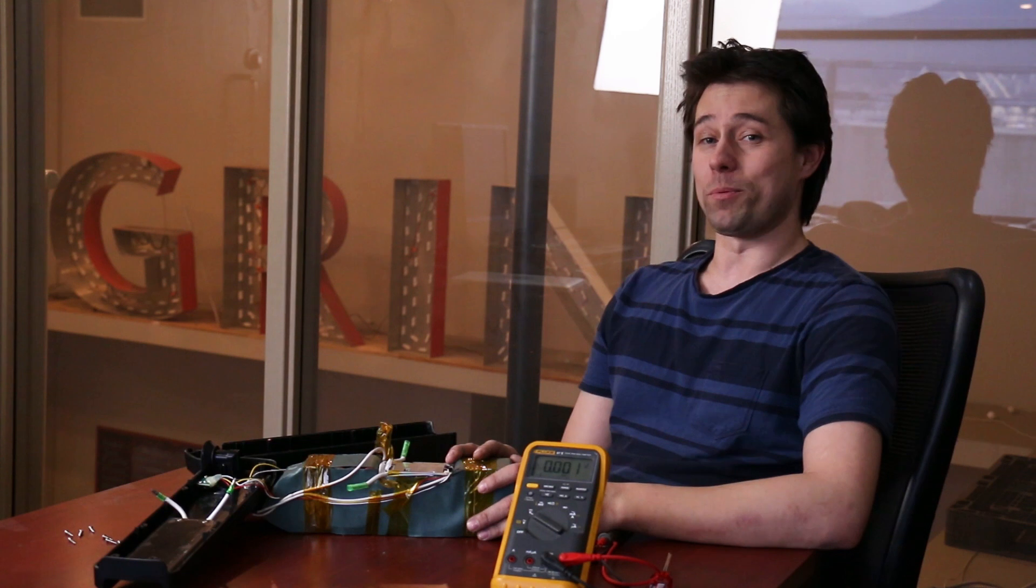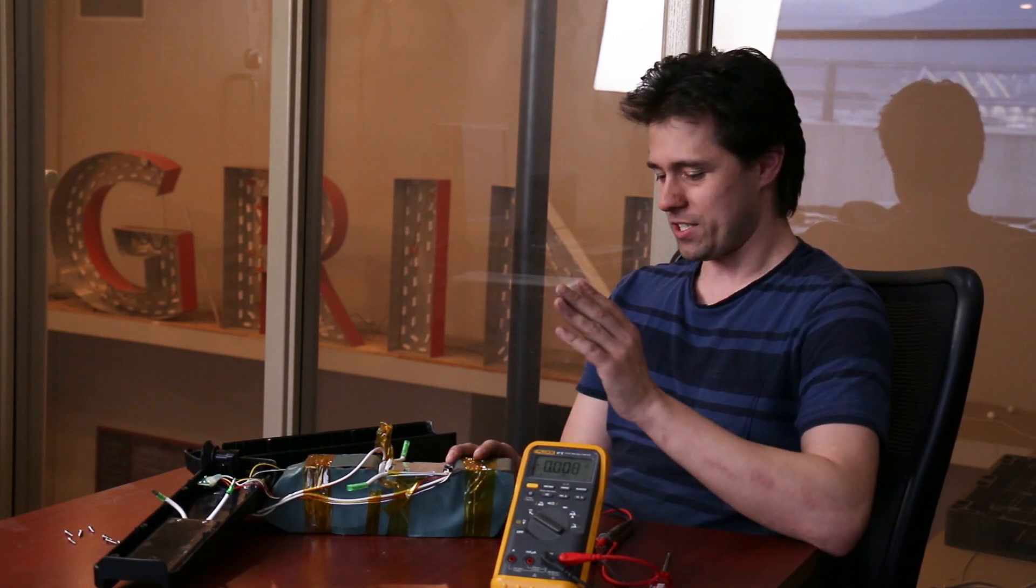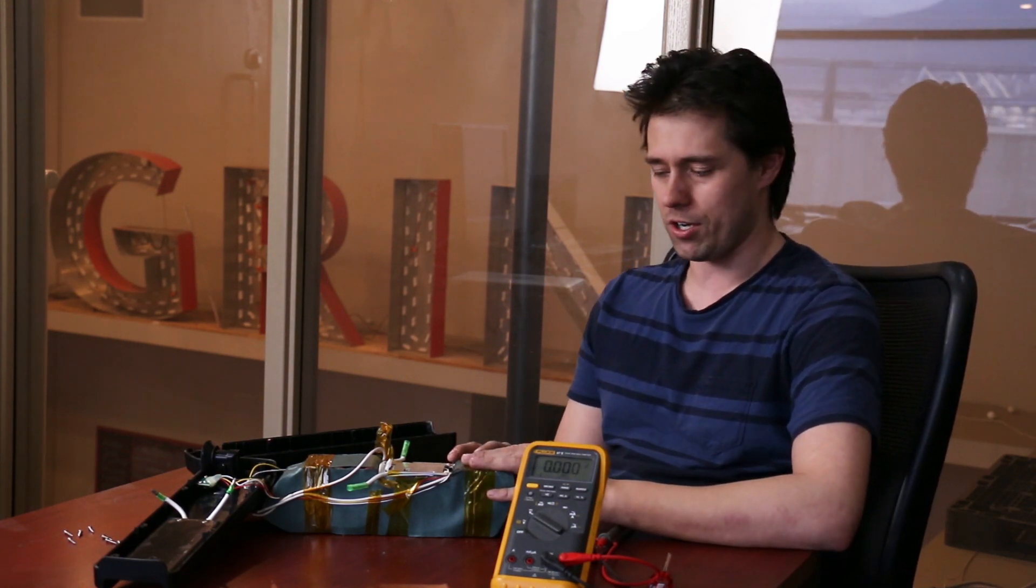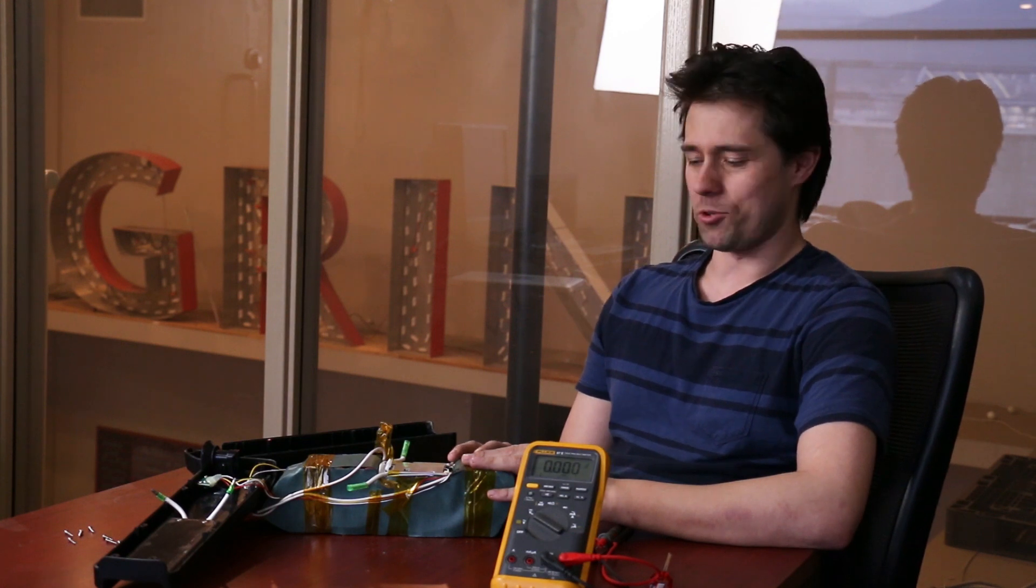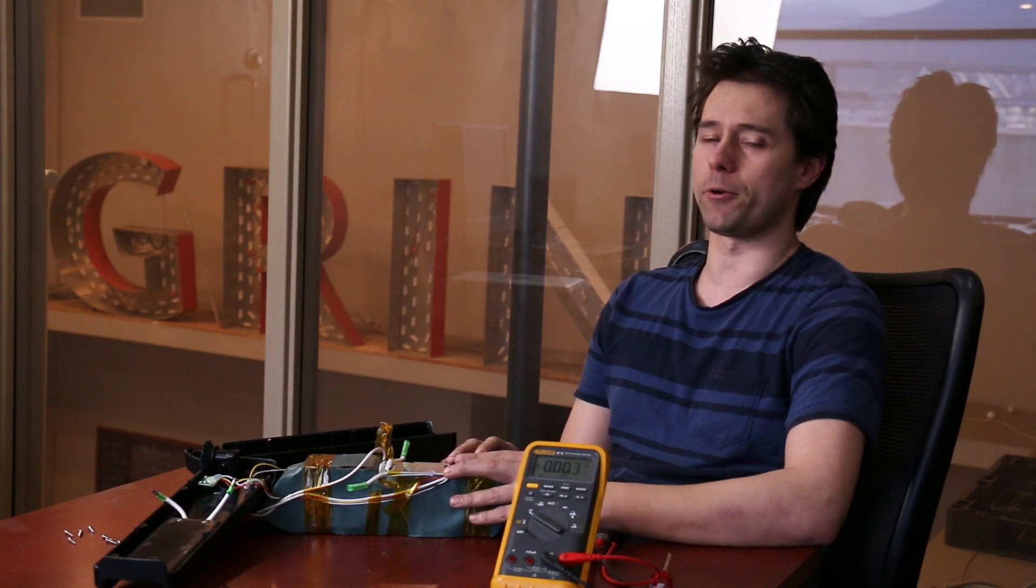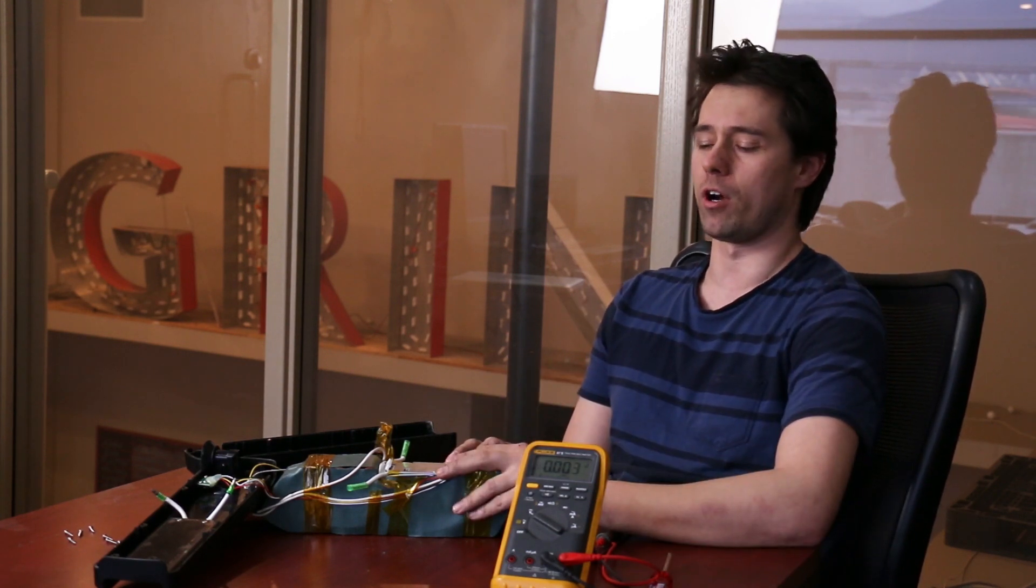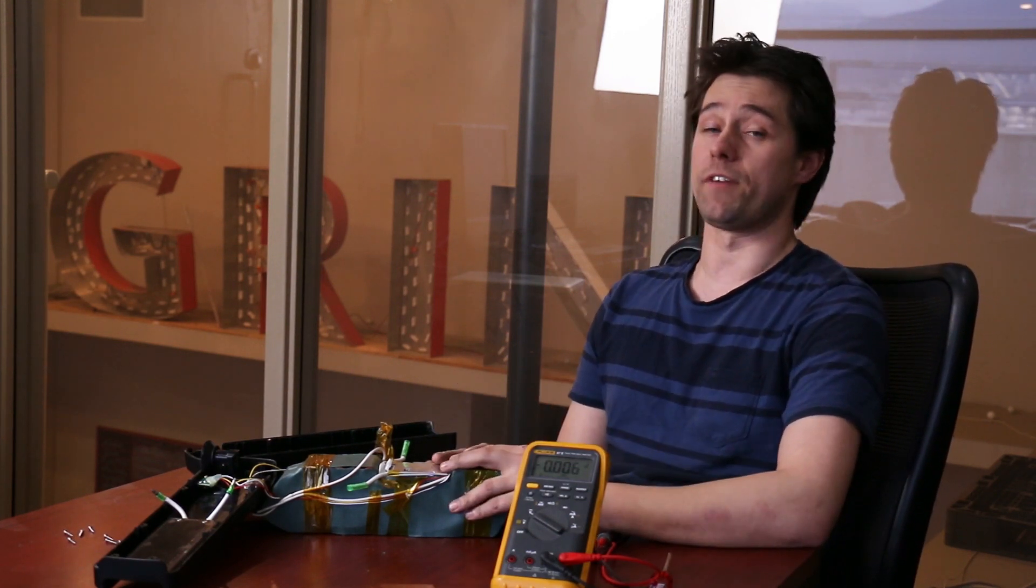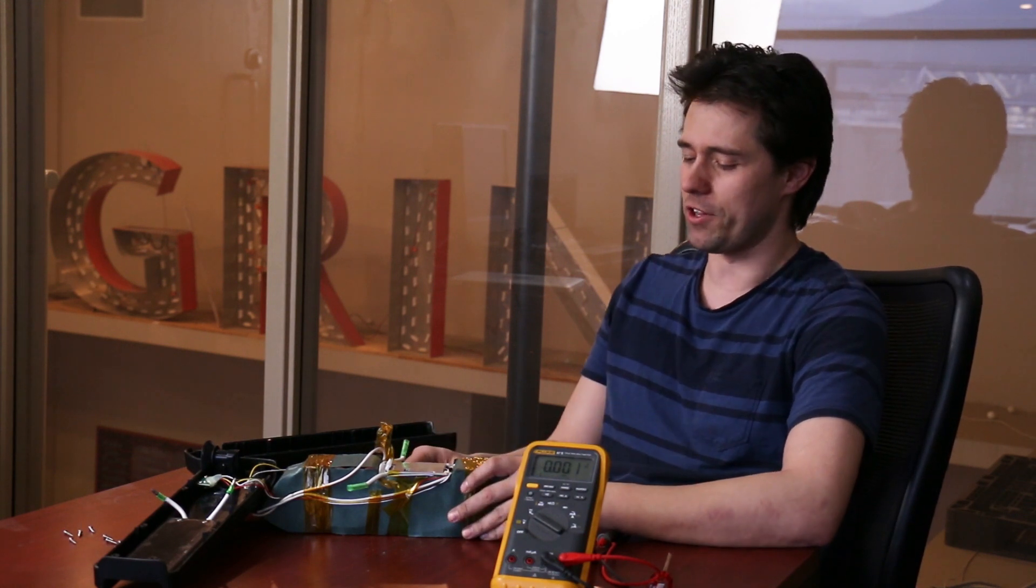But that's not going to help us here either, because what we have is a case of gross over discharge. The quiescent draw of the BMS means that a couple of months of storage, especially if you put the battery into storage in a low state of charge, can be the end of it. And this is a good lesson on the importance of keeping batteries well charged in storage.